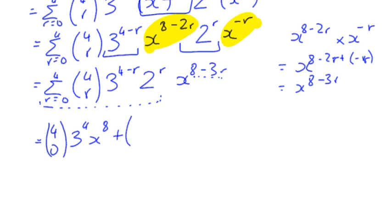When R is 1, 4 choose 1, our power of 3 becomes 4 minus 1, which is 3. And the power of 2 becomes 1. And our power of X becomes 8 minus 3, which is 5. And I can do that for each term as I go along. Power of X when R is 2 becomes 8 minus 6, which is 2.